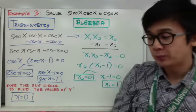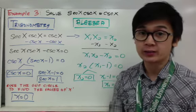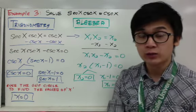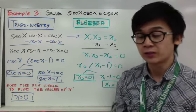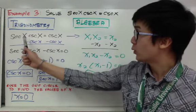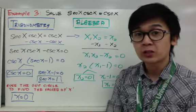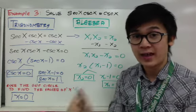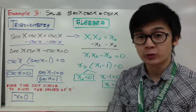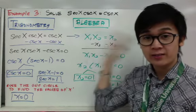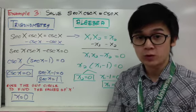Example 3 is more complex: secant x times cosecant x = cosecant x. To convert to algebra, since secant x and cosecant x are both x-type variables, I'll call them x₁ and x₂. So x₁ · x₂ = x₂. Subtract x₂ from both sides: x₁x₂ minus x₂ = 0. Factor out the common factor x₂, giving x₂(x₁ minus 1) = 0.